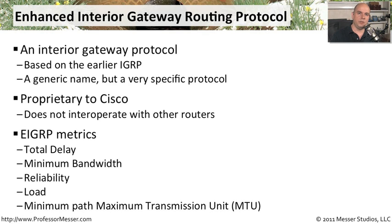EIGRP uses a number of metrics. You can look at the total delay, minimum bandwidth, reliability, load, and even the minimum path MTU to make routing determinations using the EIGRP protocol.